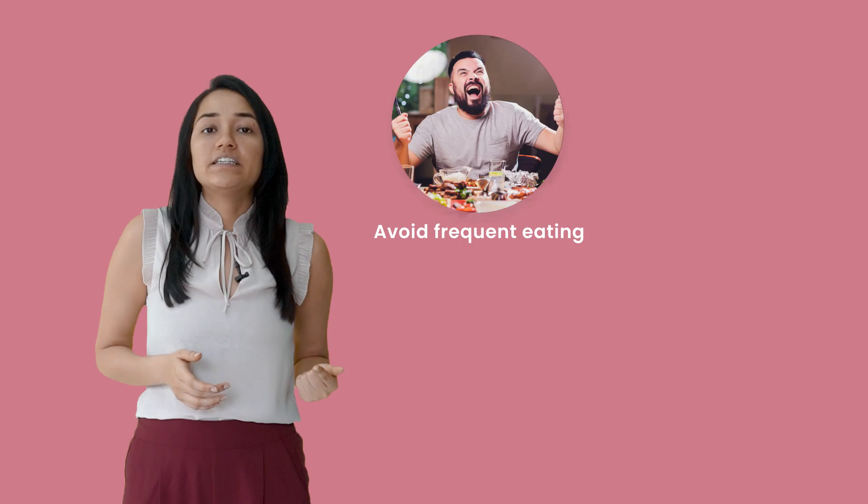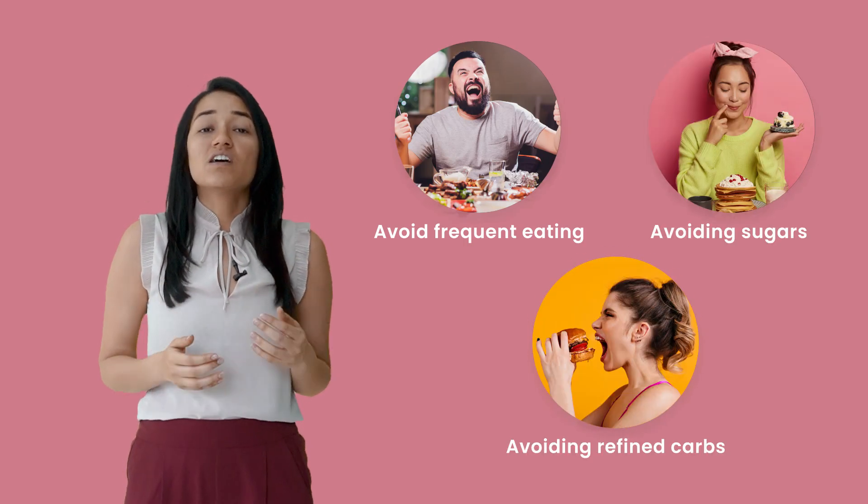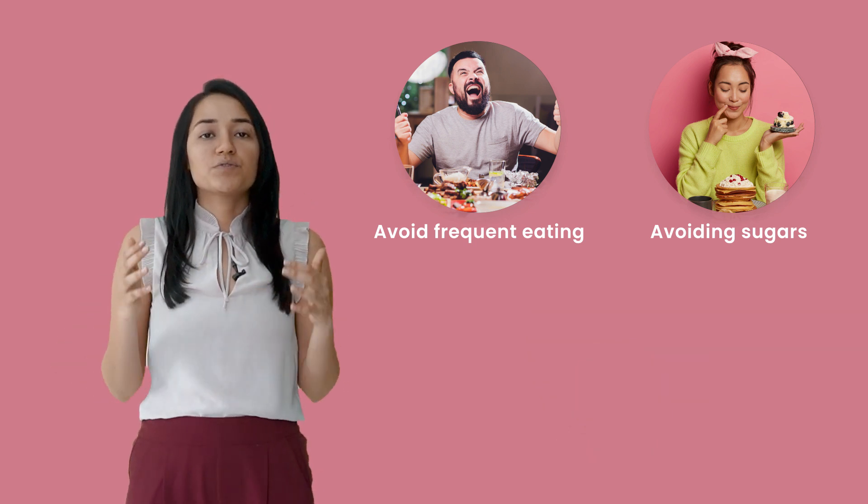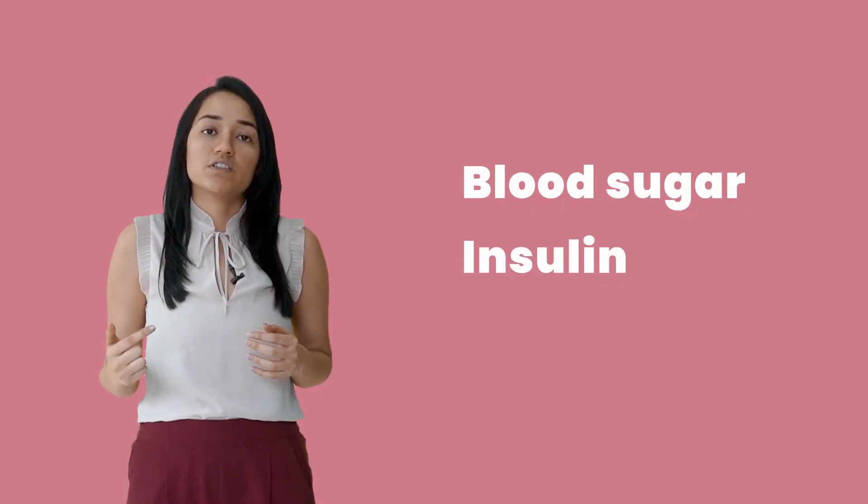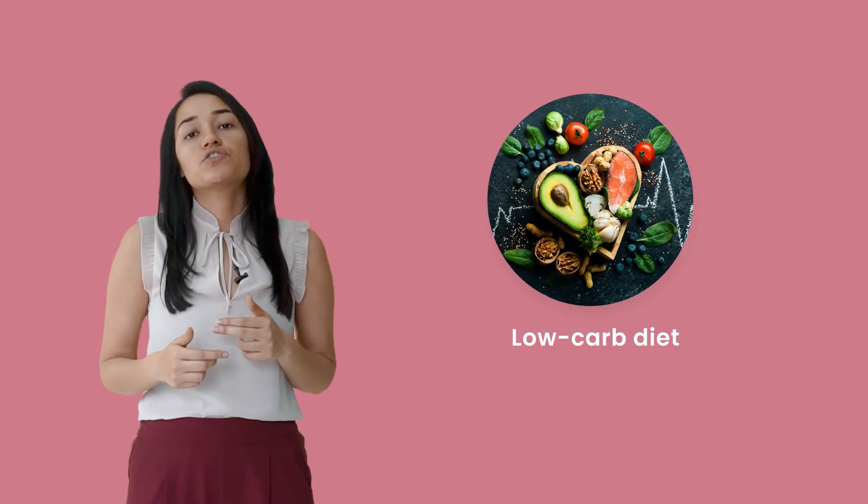You can take certain precautions to reverse insulin resistance. For example, avoiding frequent eating, avoiding sugar, refined carbs, etc., can be really helpful because these refined carbs, frequent eating, or sugar basically mess up your blood sugar and insulin levels. You can opt for a low-carbohydrate diet which is really helpful to keep your blood sugar and insulin levels under control.